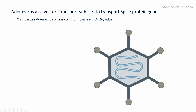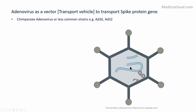How do we use this adenovirus as a vector? We remove certain genes from this adenovirus through biotechnological methods — for example, E1 and E3 genes are deleted — thus making this adenovirus replication incompetent.